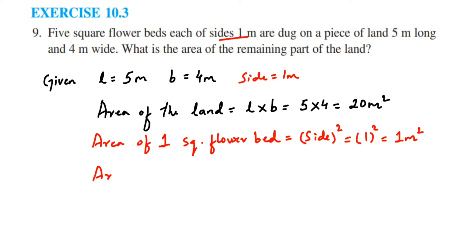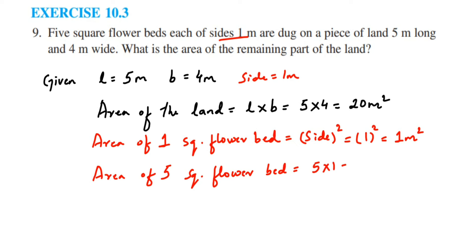Now we find the area of the 5 flower beds. For 1 flower bed it is 1 meter square, so for 5 it will be 5 into 1, which is 5 meter square. Now we have the area of the whole land and the area of the 5 flower beds, so we are going to subtract them.